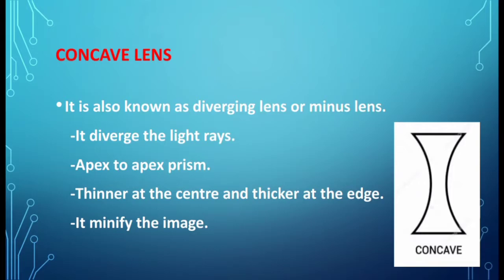Next, concave lens. Concave lens is otherwise known as a diverging lens or minus lens, because when light rays enter through the concave lens they diverge. It is termed an apex-to-apex prism: if we cut the concave lens, we get two prisms; by joining the apex to apex of these prisms, we get a concave lens. The concave lens is thinner at the center and thicker at the edge, and we get a minified image.